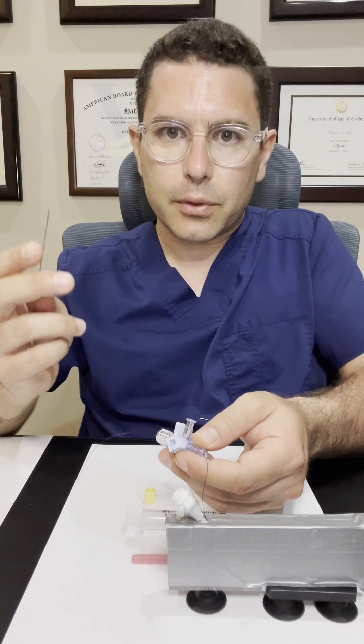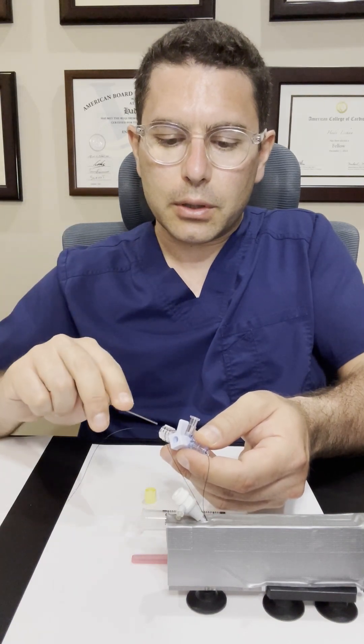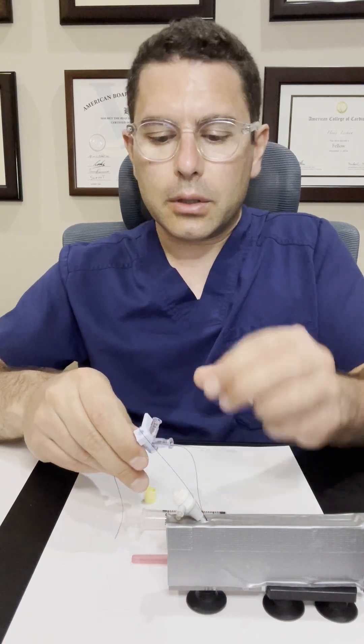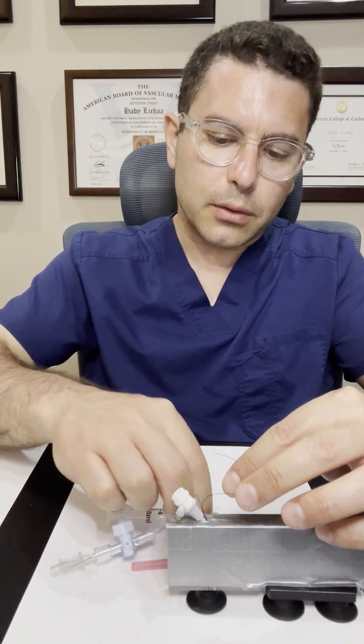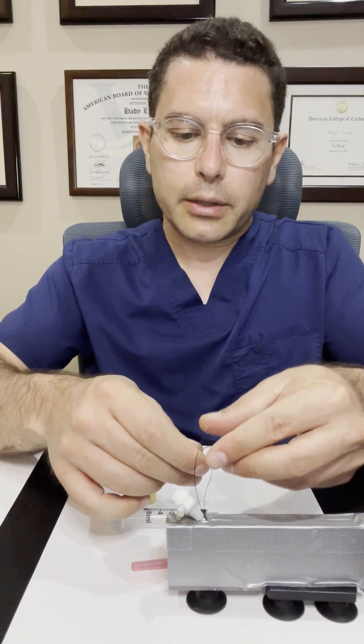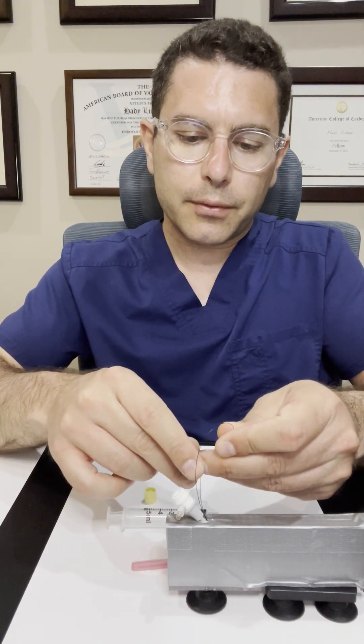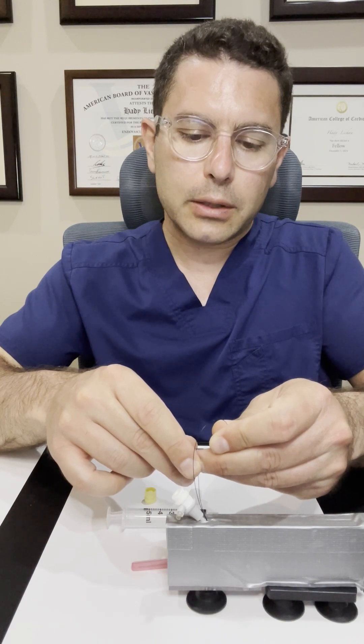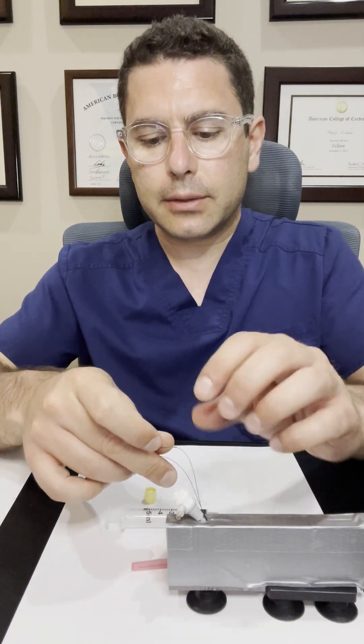We're going to do the same thing for the locking suture. So the needle introducer is introduced next to the non-locking suture. And then the locking suture is carefully introduced without pulling too much on it in order for the knot not to be finalized.